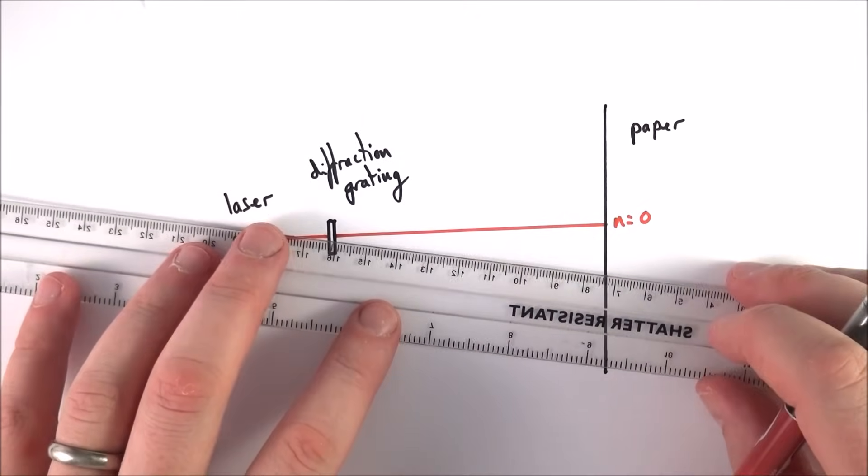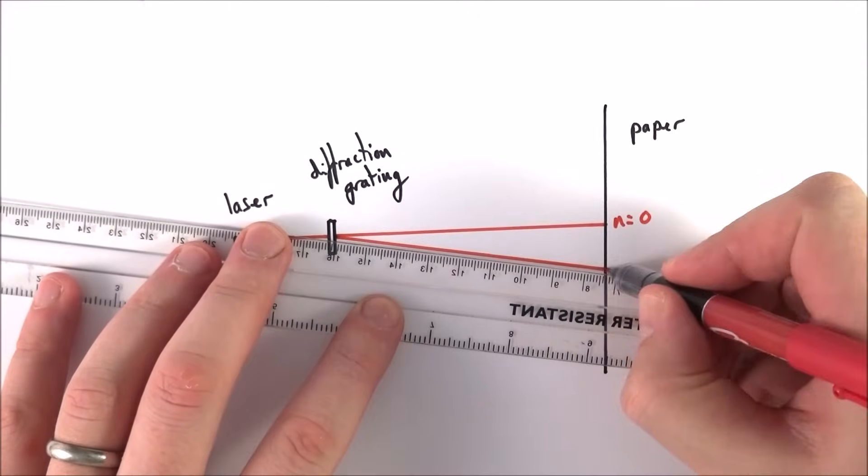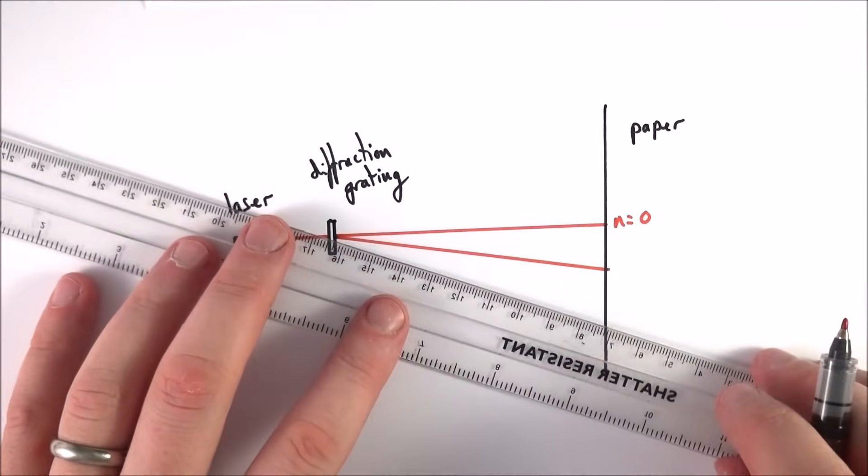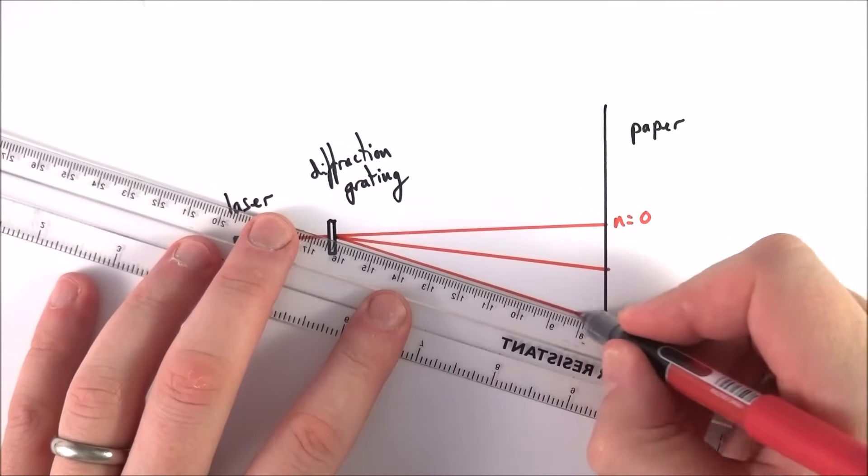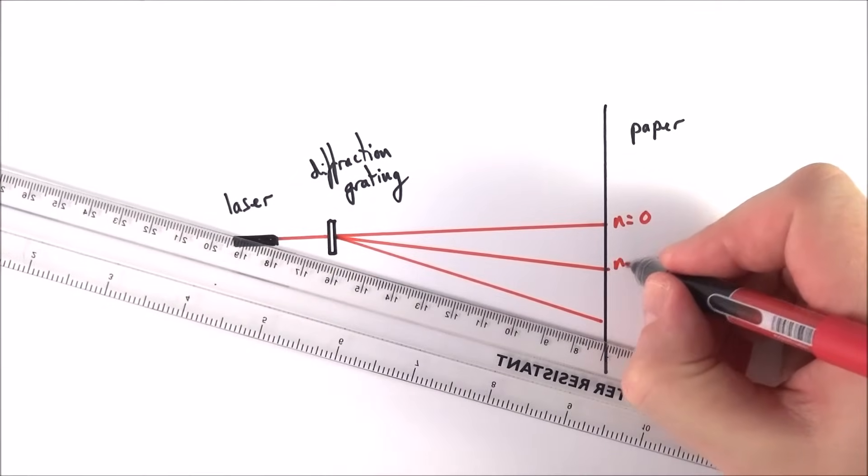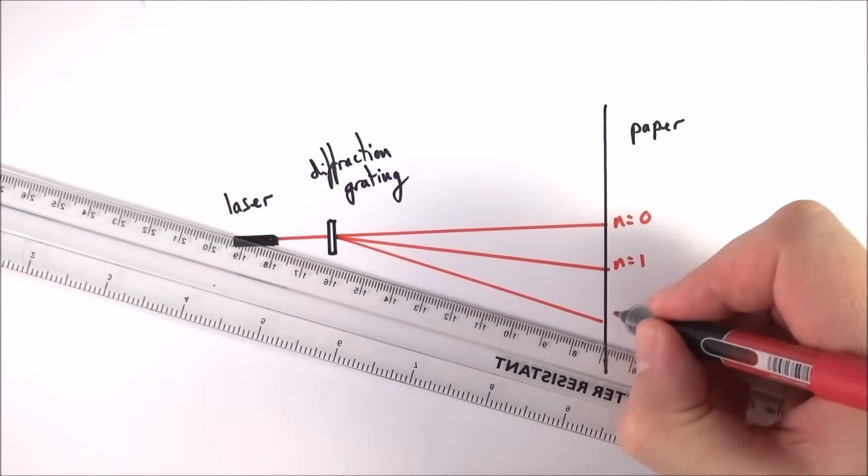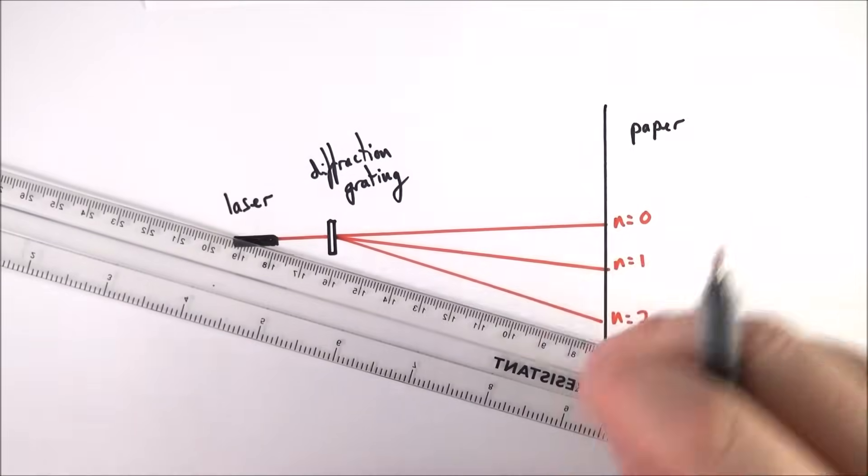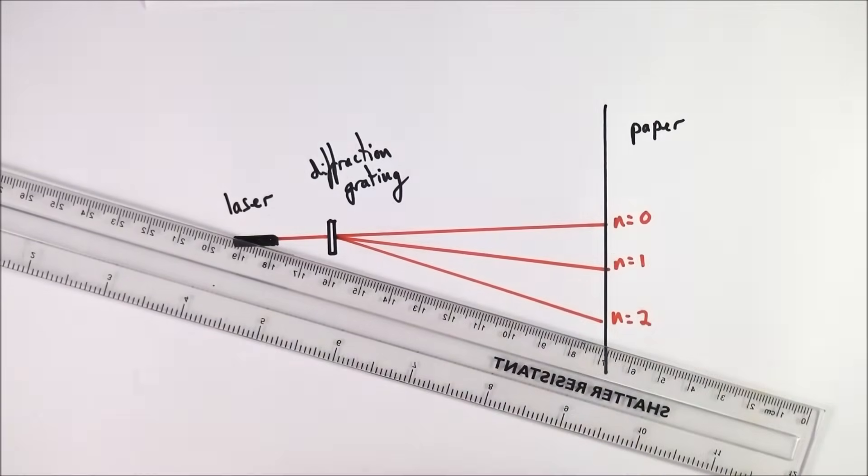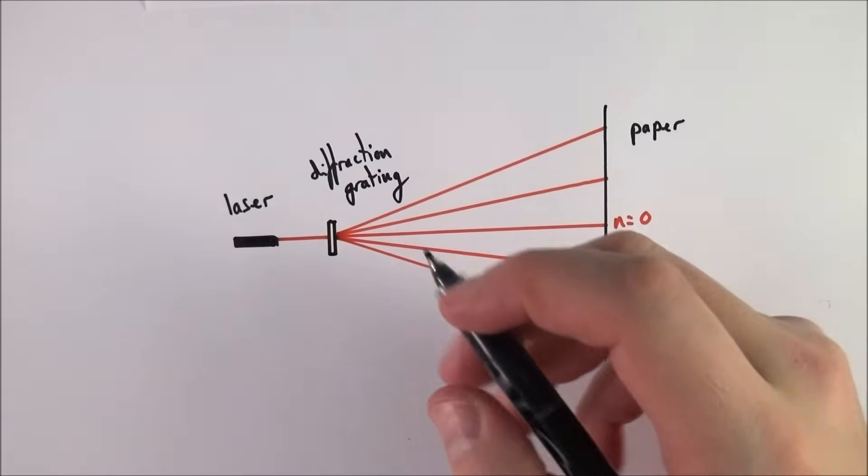What we get, looking down like a top-down view on what we see here, is that we also have these other positions on the screen where we have bright spots. This is n equals one, that's our first order, and then n equals two, which is our second order. We get the same above it as well.